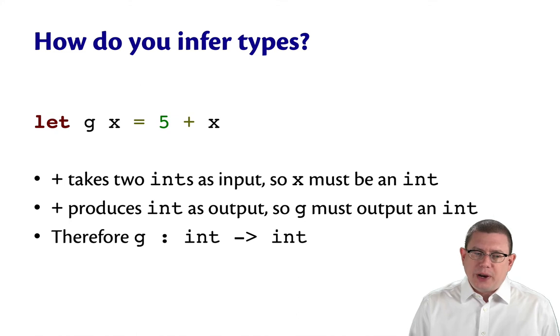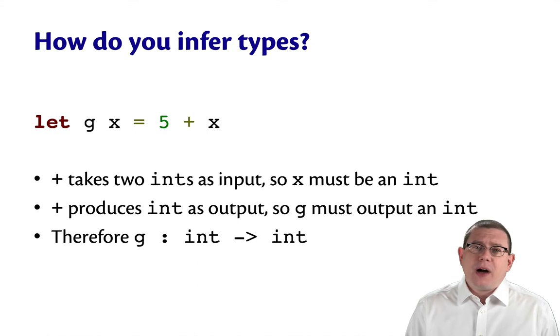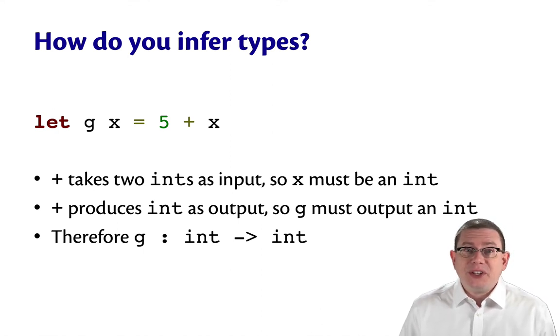Well as I look at this program, the first thing I notice is the plus sign. That plus is going to take two ints as input in OCaml. So from that, I know something about the operands on either side of it, the 5 and the x. Now, 5 obviously to me is an int, but I learned from where x and plus are showing up that x must also be an int. So where x shows up in relation to that plus sign puts a constraint on the type of x. And that constraint is that it must be an int.